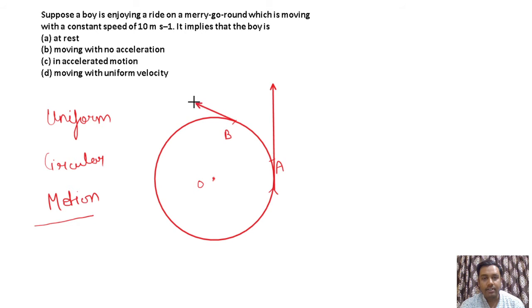Now the direction of velocity is along the tangent. If I look at this point, I can draw the direction of velocity. What is the direction? This direction is v1 and this is v2.